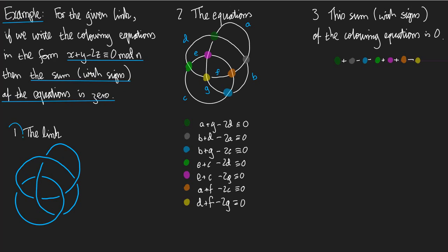Here's our link, and here are the colouring equations. I worked them all out in advance, labelling all the arcs with a blue letter A, B, C and so on, and labelling all the crossings with a colour. For each crossing I've written out the colouring equation. Let's check the orange one: A is one understrand, F is another, and C is the overstrand, so we should have A plus F minus 2C congruent to 0. And indeed that's what's written.